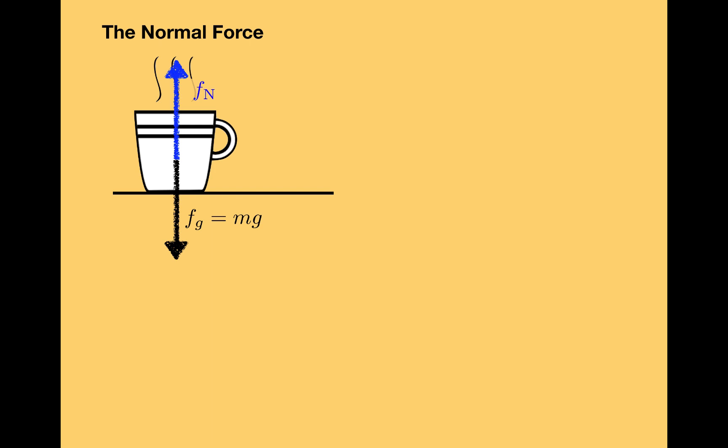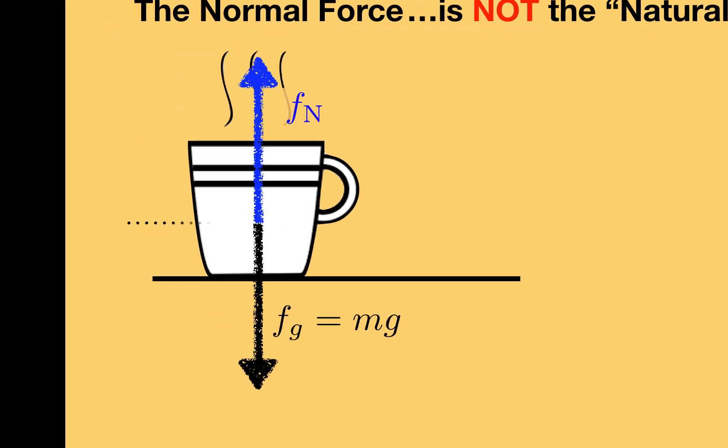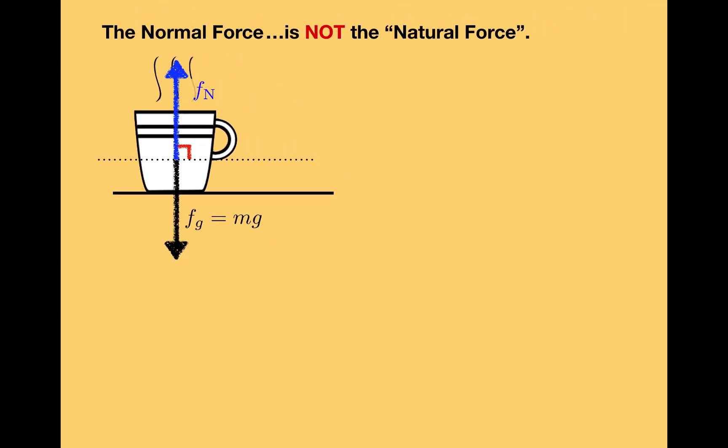Now I want to switch gears a bit and talk about why the support force is named the normal force. Students often want to call the normal force the natural force, but if you want to sound like a physicist, you should never use this term. The reason this force is called the normal force is that it always acts perpendicular to the surface that's producing it. In mathematics, normal is sometimes used as a synonym for perpendicular, and that's the way it's being used here. So let's look at some more examples to show that the normal force is always a perpendicular force.